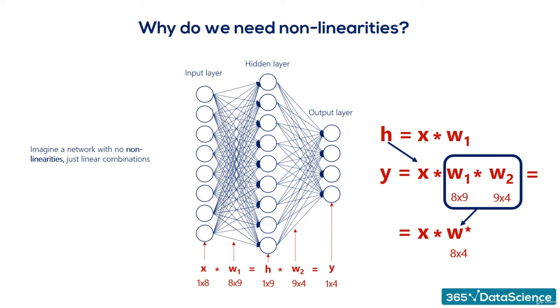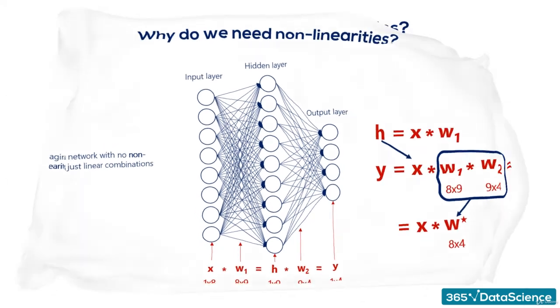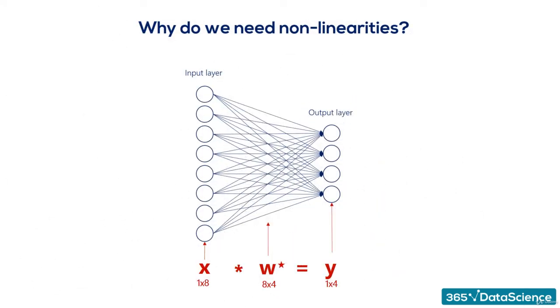Knowing that, we realize the hidden layer is completely useless in this case. We can just train this simple linear model and we would get the same result. In mathematics, this seems like an obvious fact, but in machine learning, it is not so clear from the beginning.